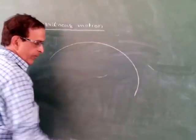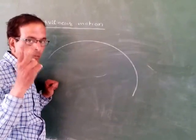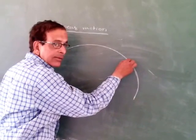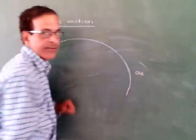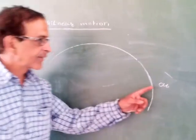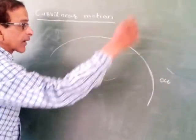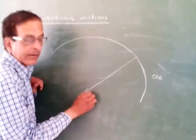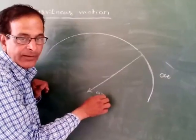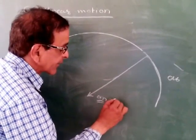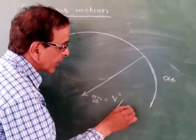Whenever the particle moves along a curved path, remember that there will be two components of acceleration: one is along the curve path, and that is called tangential acceleration; the other acceleration is towards the center of curvature, and that is called the normal acceleration.